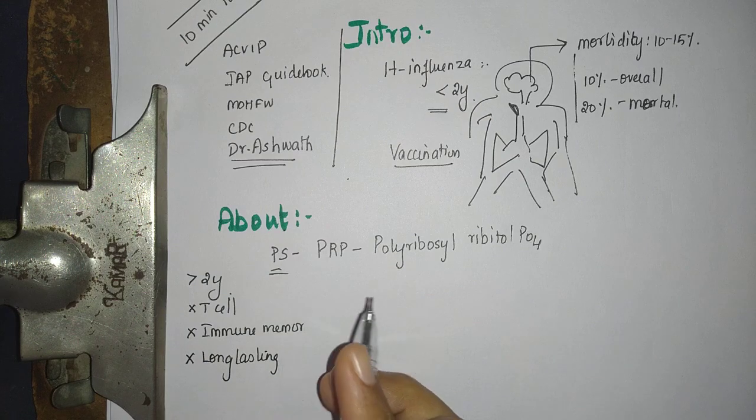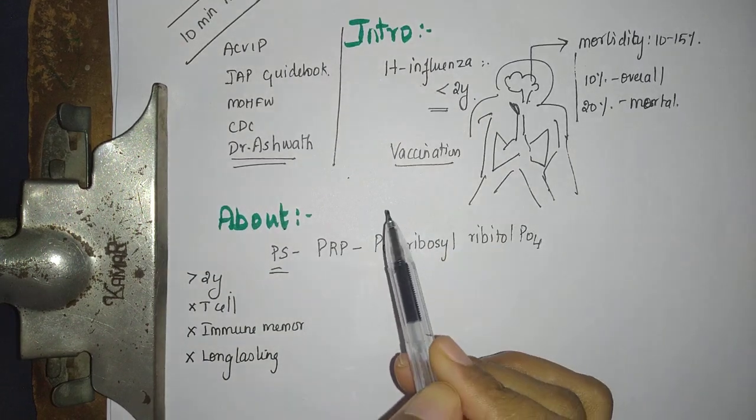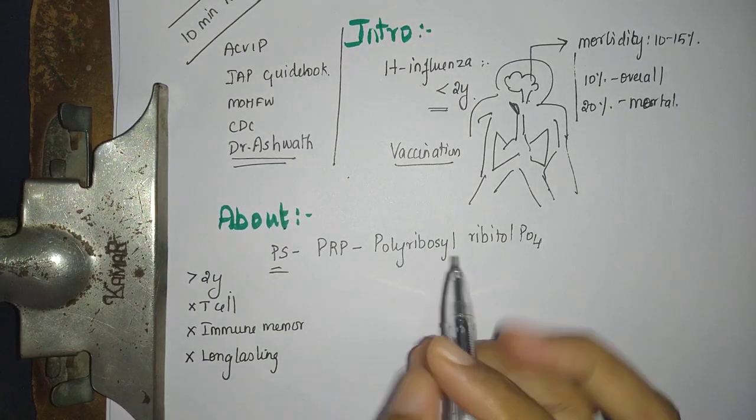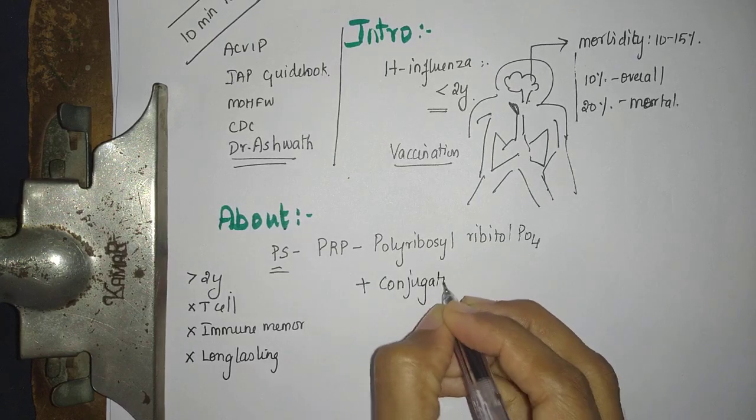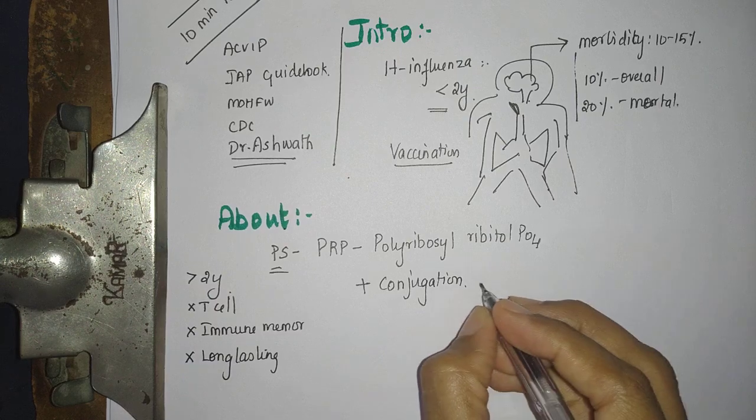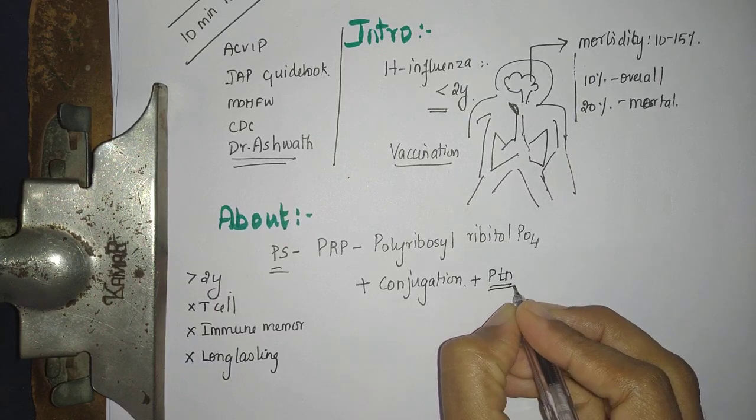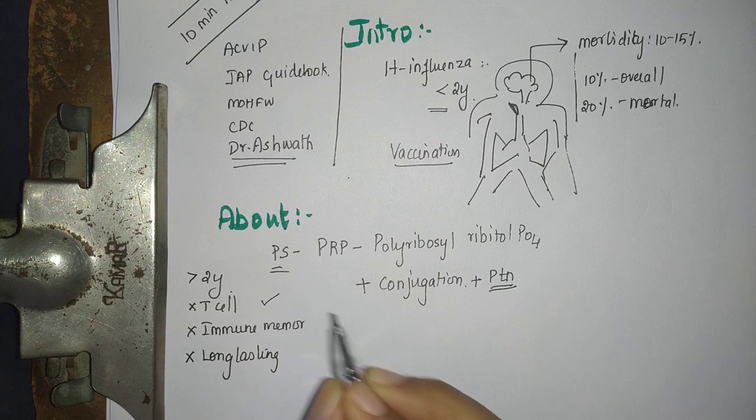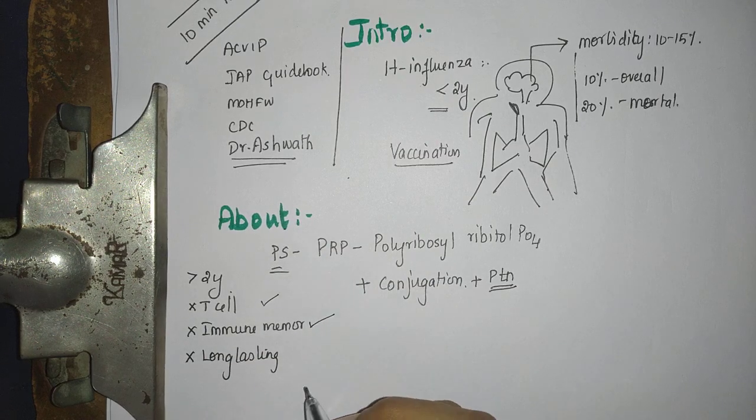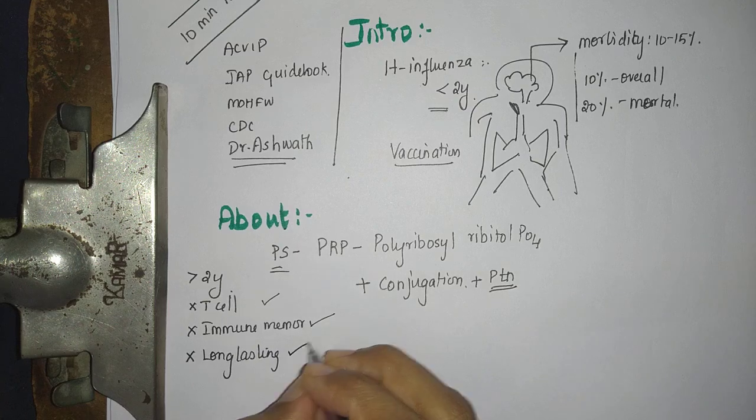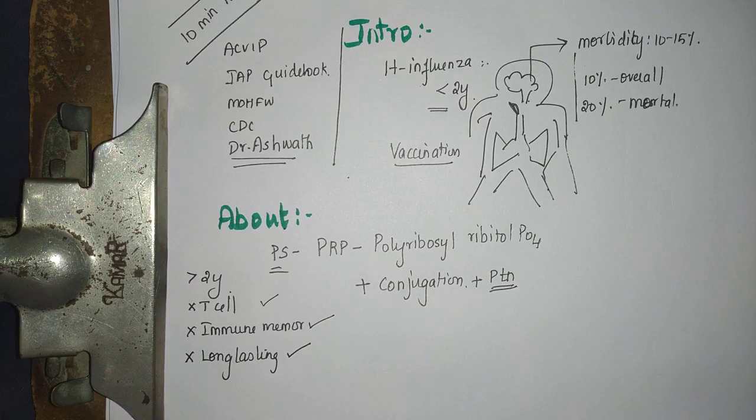We want protection in a child who is less than 2 years of age. So intelligently they did conjugation. They conjugated it with a protein. Because protein is capable of inducing a T cell memory which results in memory induction, which results in long lasting immunity and good boosting.